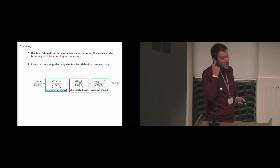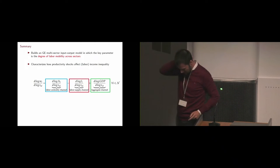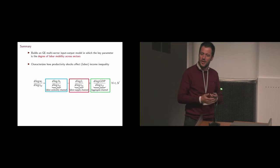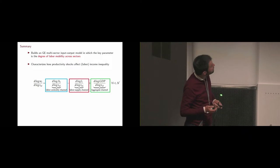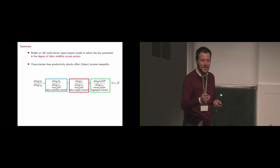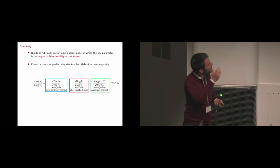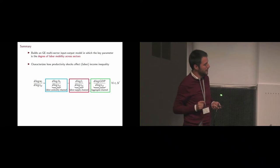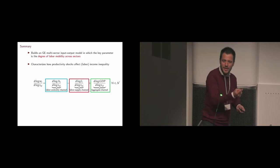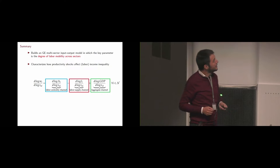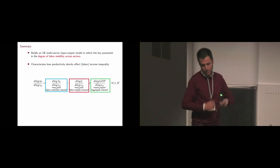Let me start with a summary of the paper. The paper starts from the literature on production networks. There is a well-developed literature on it, and they take the standard model there and add a key parameter which captures the degree of labor mobility across sectors. In standard models, you typically have free mobility of labor and only one wage in equilibrium. Here, with frictions to labor mobility, you may start generating differences in wages across sectors.